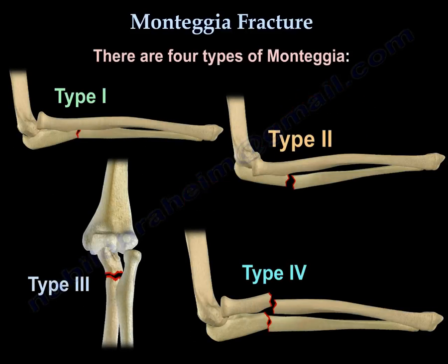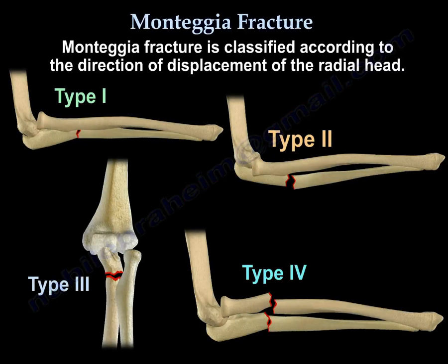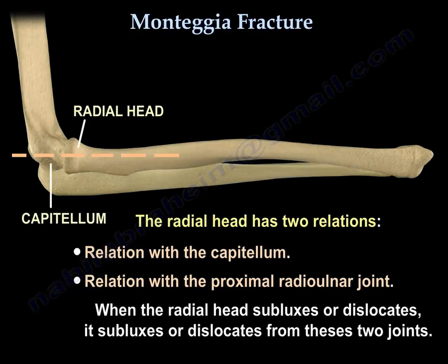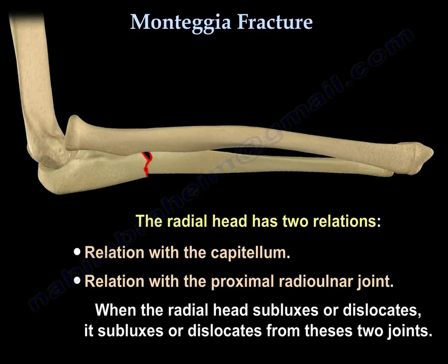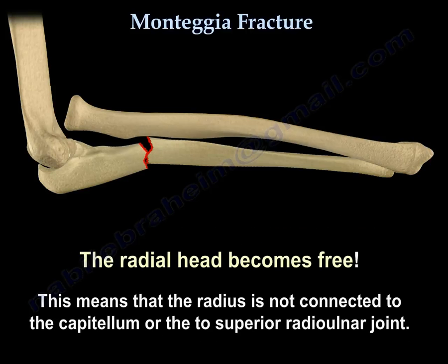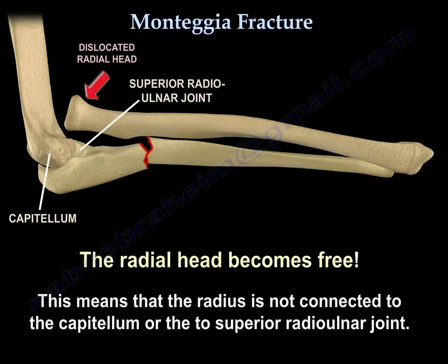There are four types of Monteggia. Monteggia fracture is classified according to the direction of displacement of the radial head. The radial head has two relations: relation with the capitellum and relation with the proximal radioulnar joint. When the radial head subluxes or dislocates, it does so from these two joints, and the radial head becomes free — meaning the radius is not connected to the capitellum or to the superior radioulnar joint.